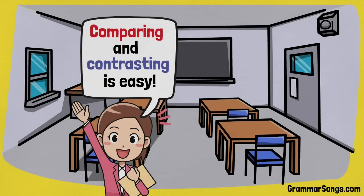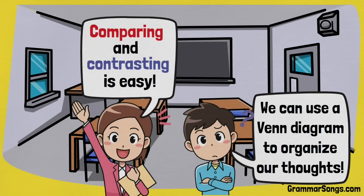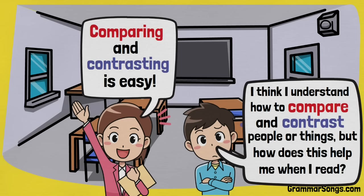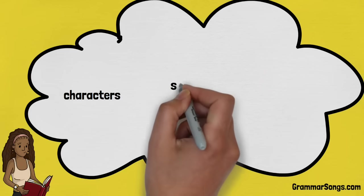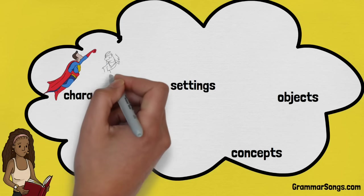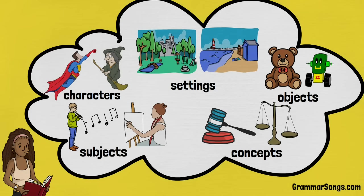Comparing and contrasting is easy! I'm glad you think so. We can use a Venn diagram to organize our thoughts. I think I understand how to compare and contrast people or things, but how does this help me when I read? You are asking an excellent question. Comparing and contrasting characters, settings, objects, subjects, and related concepts when you read can help you highlight details within the text and organize information for better understanding.